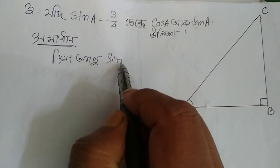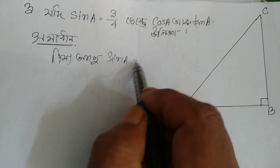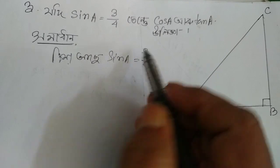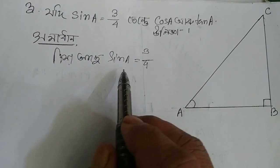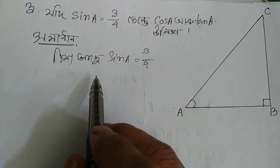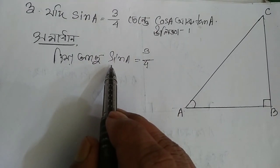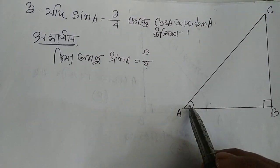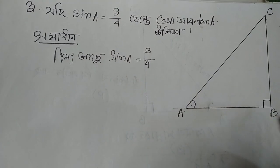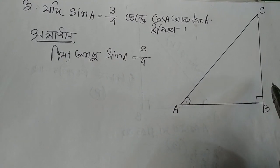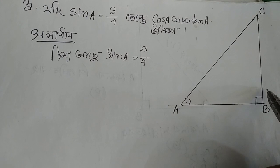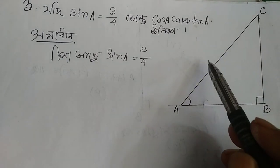A is equal to 3 by 4, sin A is equal to 3 by 4. So if I know that sin A is equal to P by H.